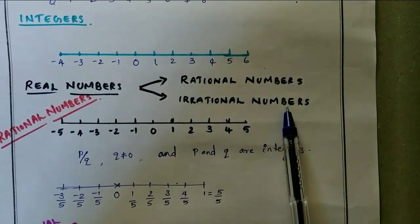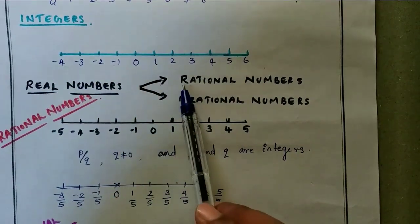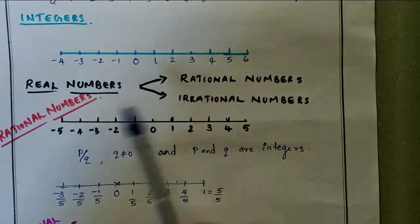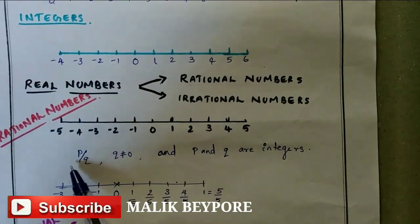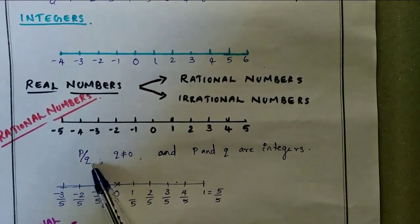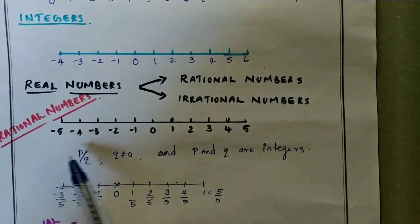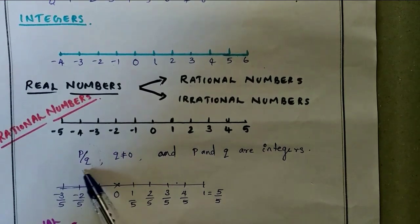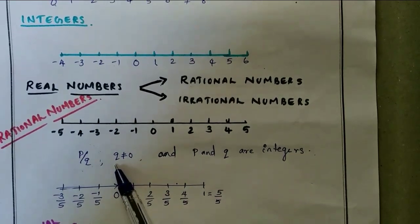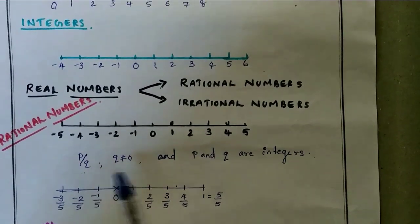Rational numbers and irrational numbers together are known as real numbers. We have to first discuss what rational numbers are. Rational numbers means a number that can be written in the form of p by q. You already learned this in 8th standard. A number can be written in the form of p by q, where p and q are integers and q is not equal to zero.